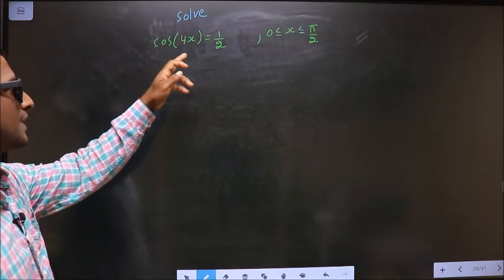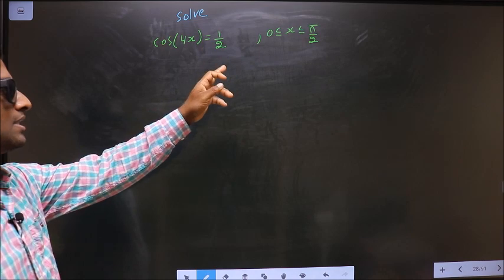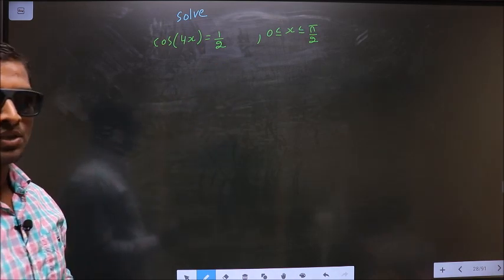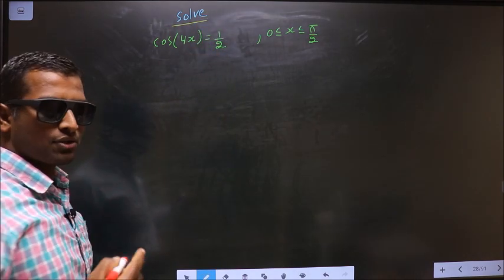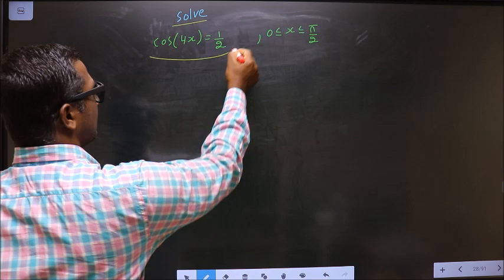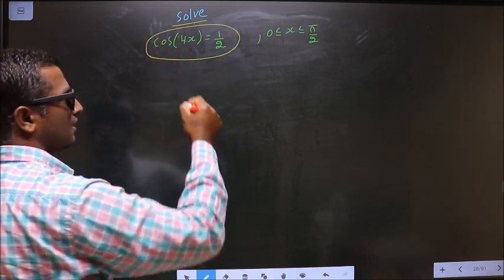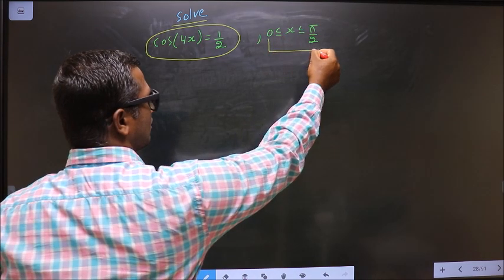Solve cos(4x) = 1/2 where x lies in the interval [0, π/2]. Here they told you to solve, so you should find the values for x satisfying this equation, and it should lie in the interval 0 to π/2.